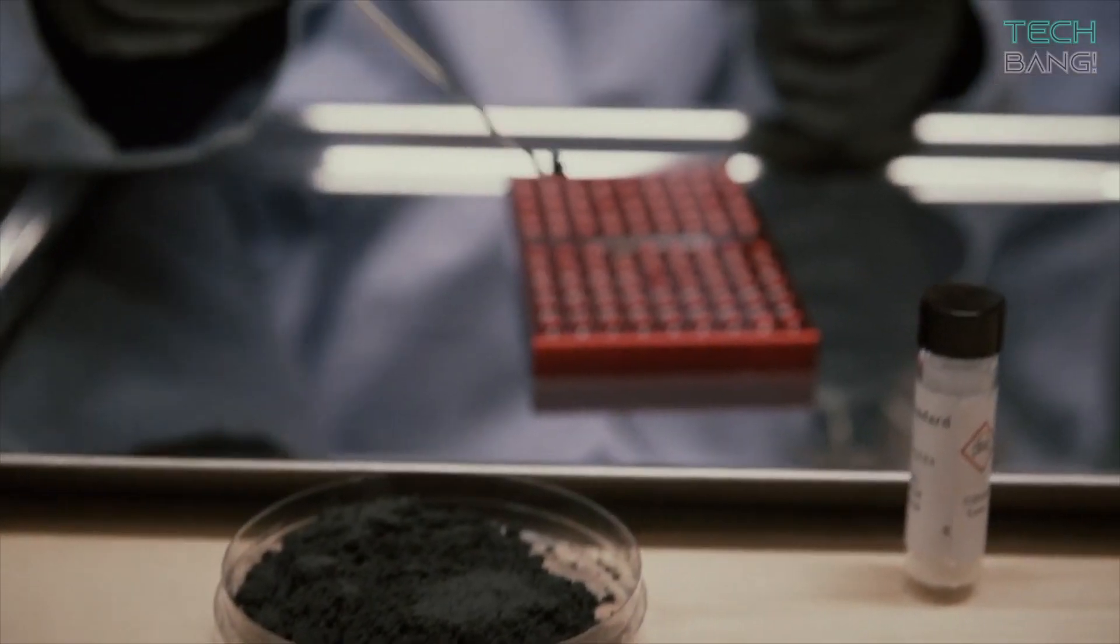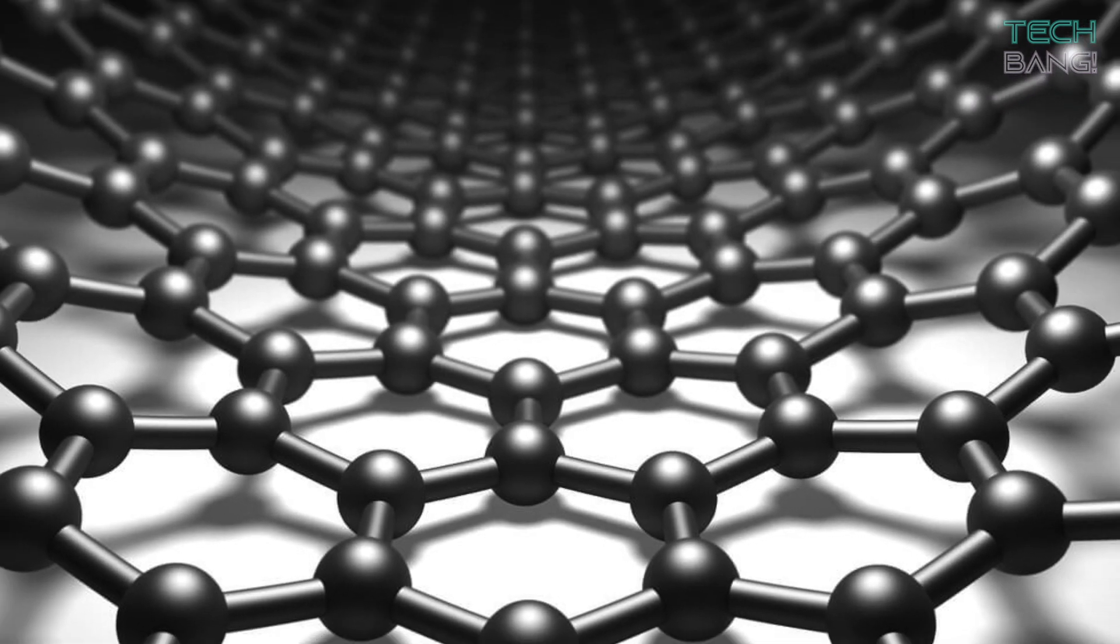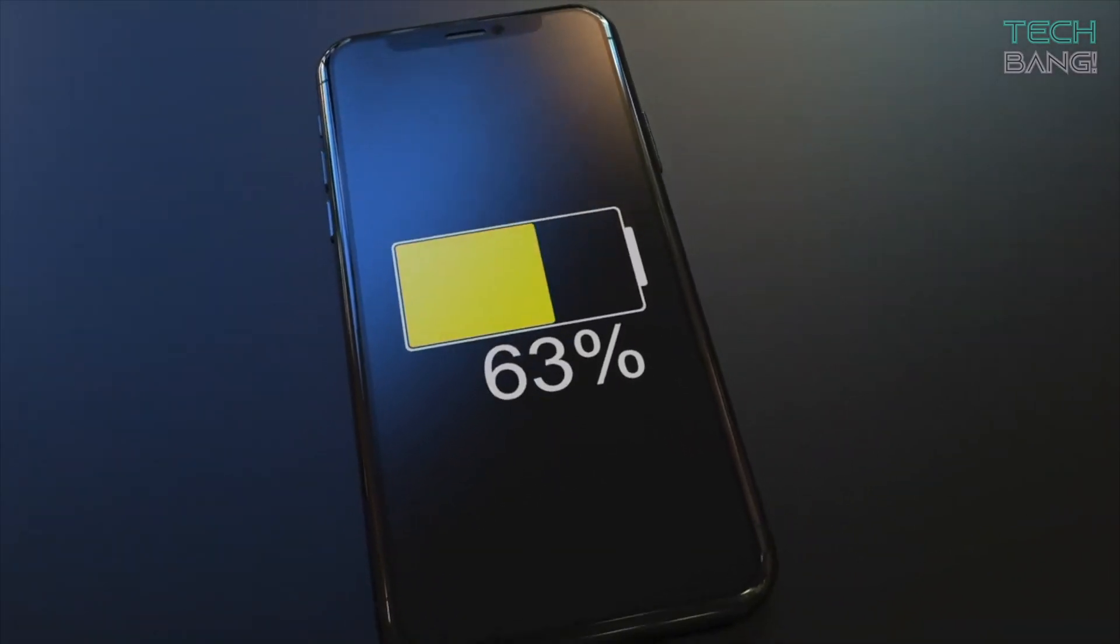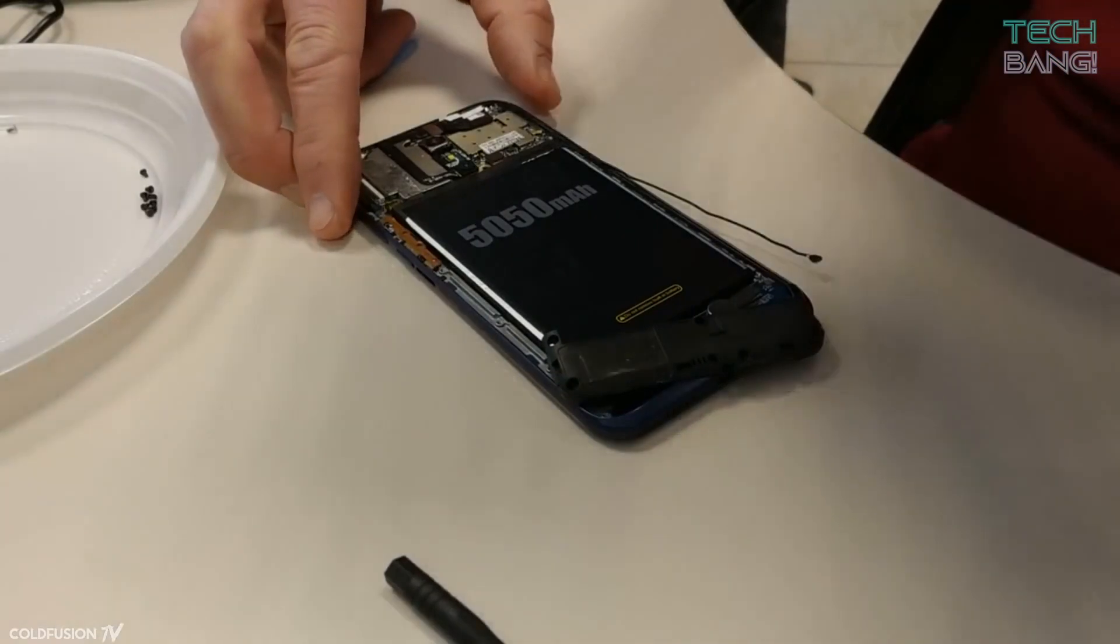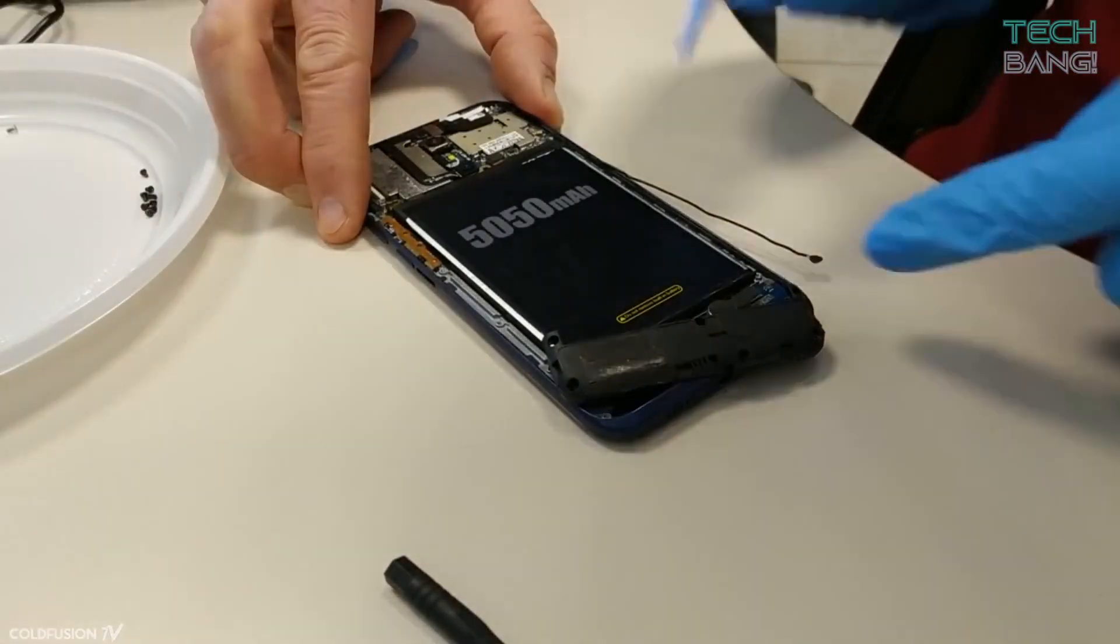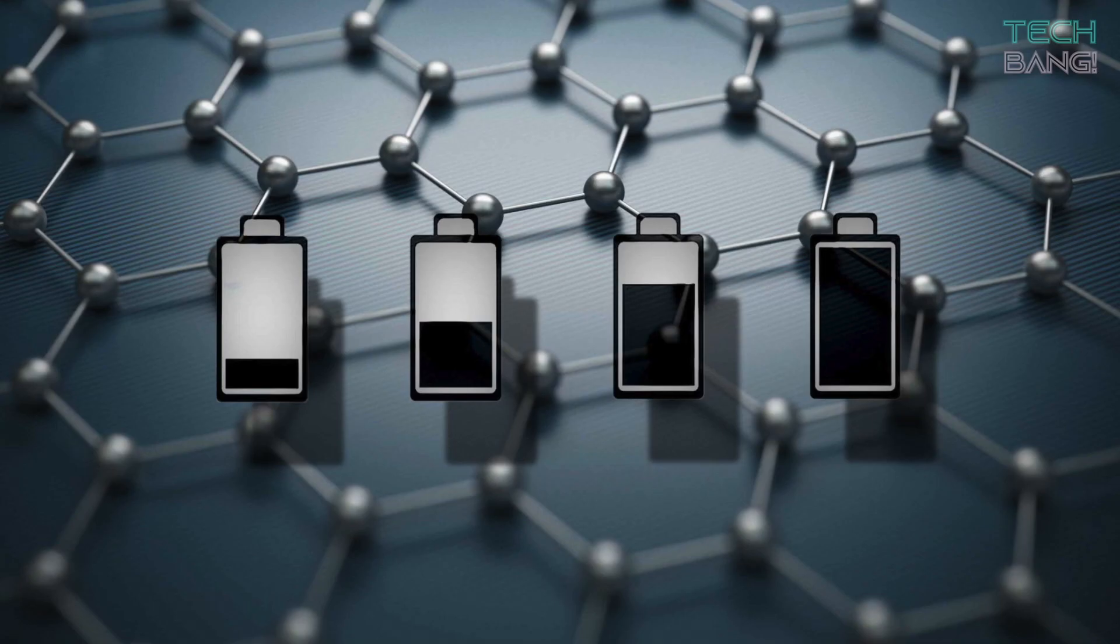Graphene offers higher electrical conductivity than lithium-ion batteries. This allows for faster charging cells that can deliver very high currents as well. This is particularly useful for car batteries, for example, or fast device-to-device charging.